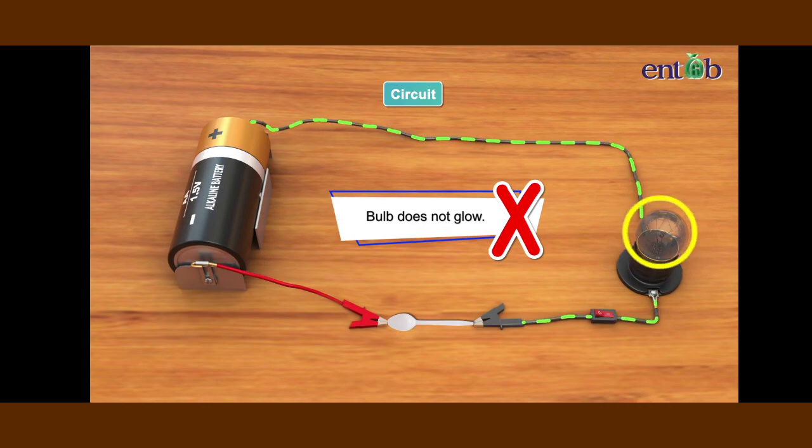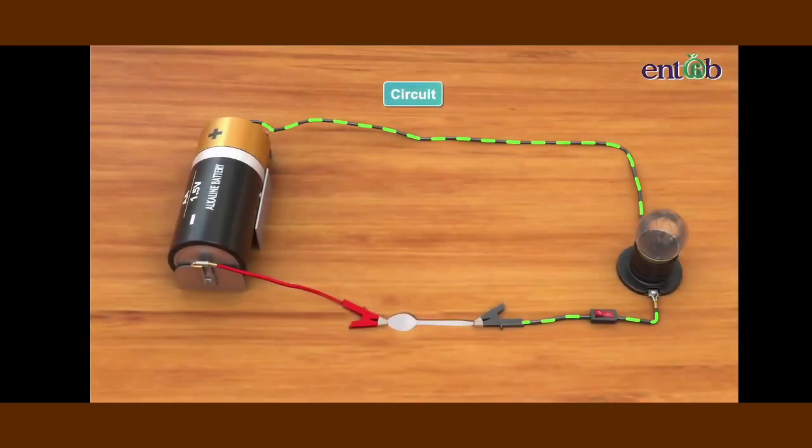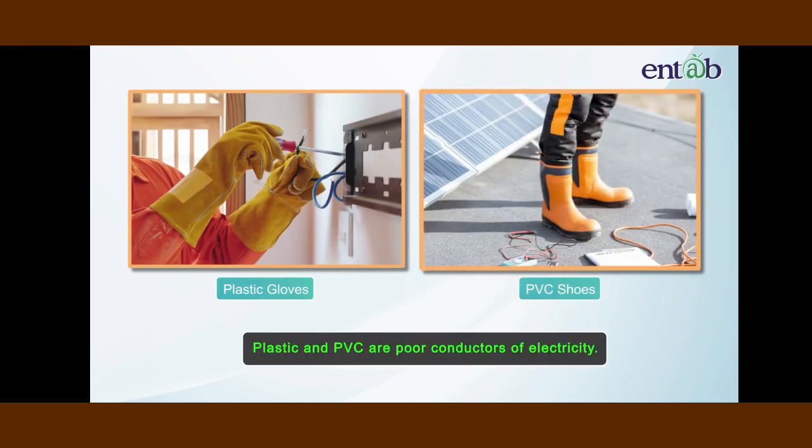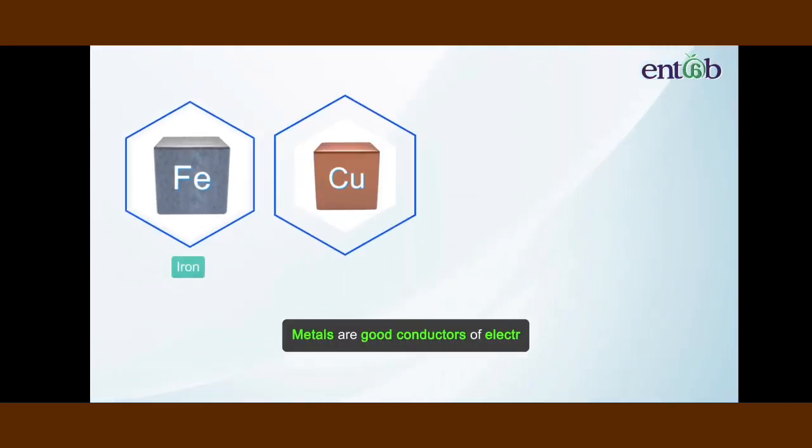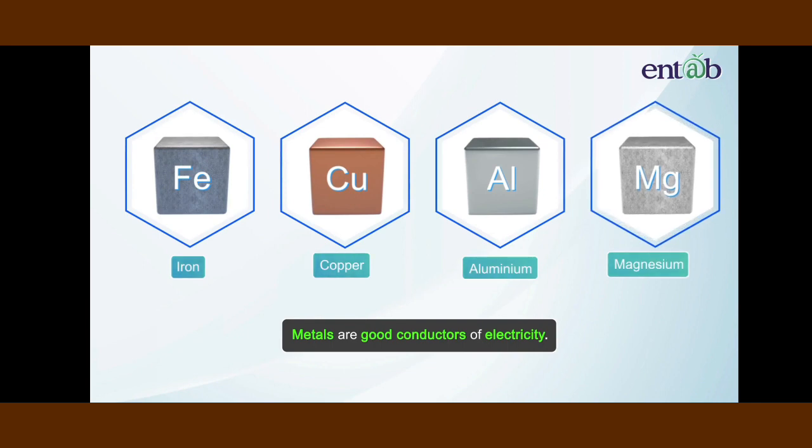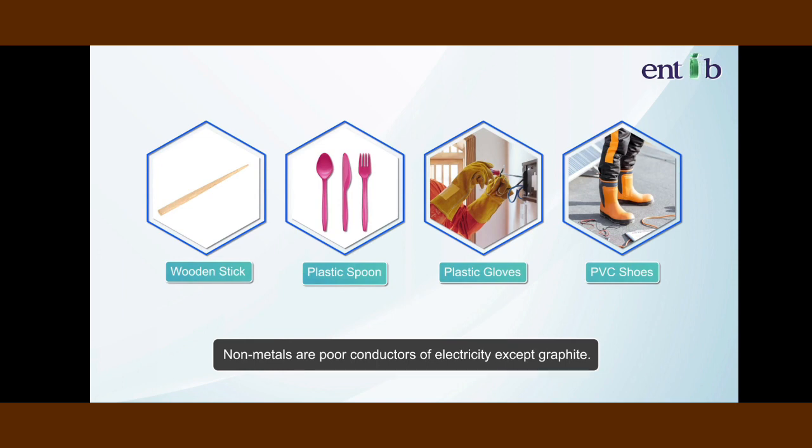Replacing the wooden stick with a plastic spoon, the bulb does not glow in this case as well. It is because plastic is also an insulator. That is the reason why electricians use plastic gloves and PVC shoes or slippers while working. So what can we conclude from this activity?